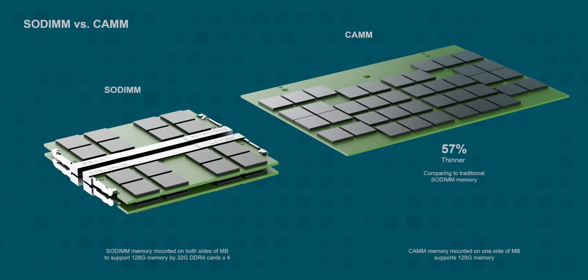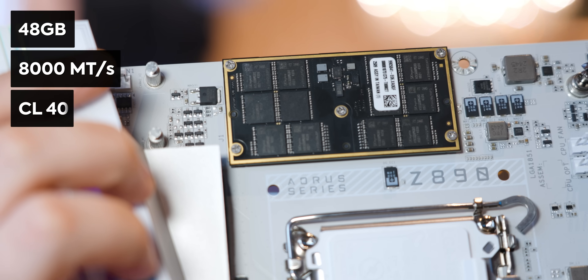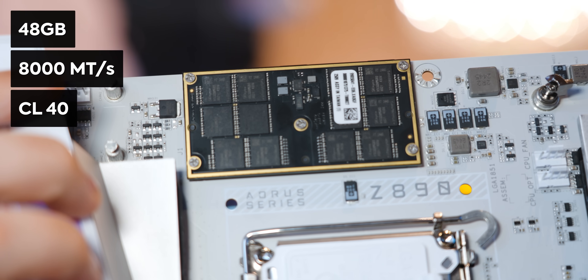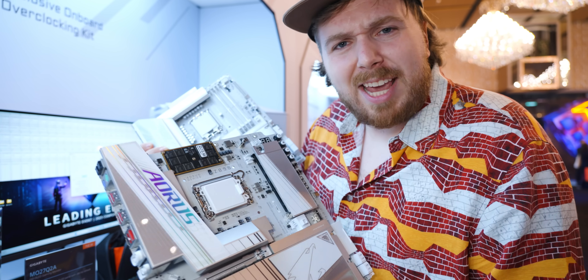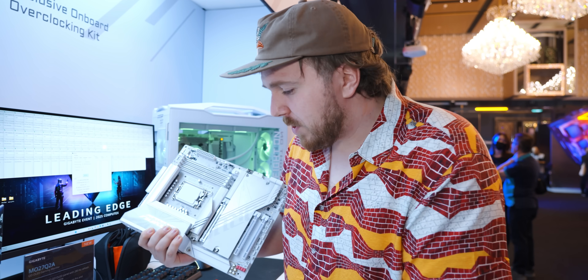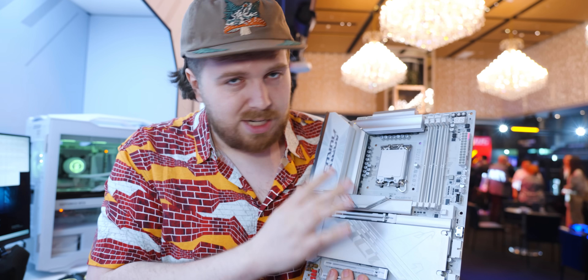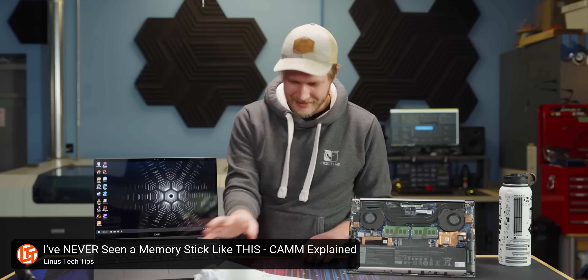Gigabyte is bringing CAMM to their motherboards. Right here is 48GB of RAM running at 8,000 megatransfers per second at CL40 speeds. So why is CAMM so much faster? Well, it's not to do with the memory chips specifically — it almost all comes down to the form factor. I won't go into a ton of detail on this; if you want to learn more, go check out our CAMM2 video on LTT.